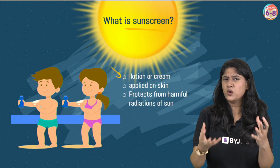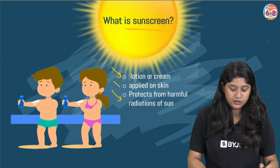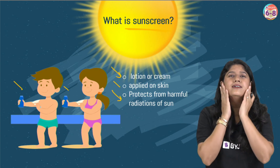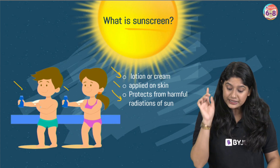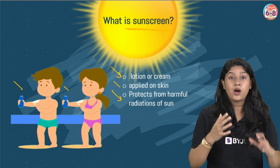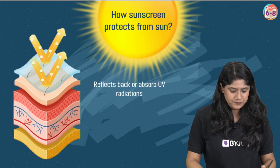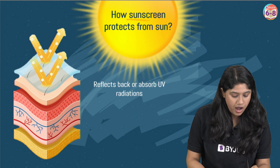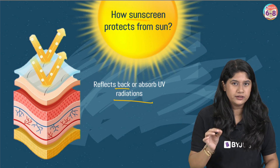Sunscreens come in lotion form or cream form. We apply it on our skin and it actually protects us from harmful UV radiation. People apply layers and layers of sunscreen on their faces before going out in the sun. These sunscreens actually help us by reflecting back the harmful UV radiation or absorbing it. We'll be discussing this in a little bit more detail further.